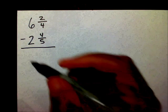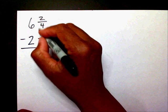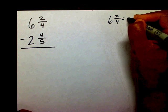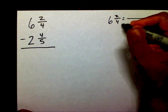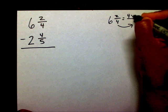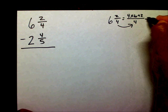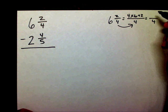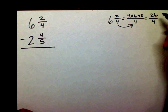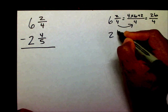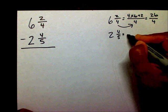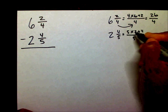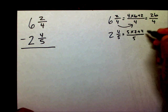We need to change our mixed numbers into improper fractions. So 6 and 2 fourths equals — the denominator is 4 — 4 times 6 plus 2. 4 times 6 is 24, plus 2 is 26. And 2 and 4 fifths equals 5 times 2 plus 4. 5 times 2 is 10, plus 4 is 14 fifths.